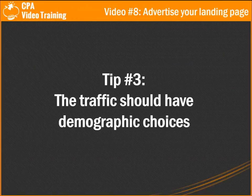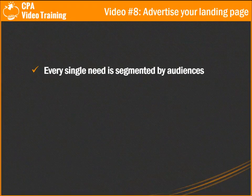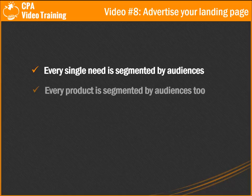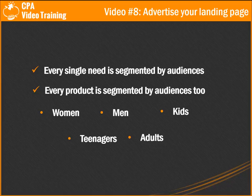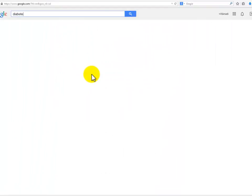Tip number three: the traffic should have demographic choices. It is highly imperative that the traffic source have as many demographic choices as possible. Every single need among human beings is segmented by audiences, and therefore every product is segmented by audiences — the same thing happens online. There are products for women, for men, for kids, for teenagers, and for adults. You have to make sure what audience your offer has been created for and then identify as many characteristics of that audience as you can.